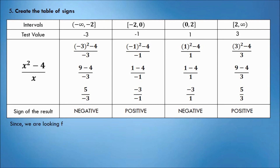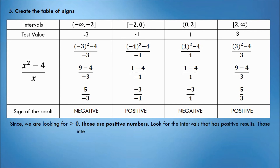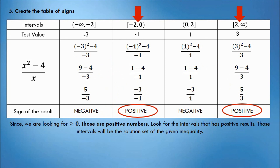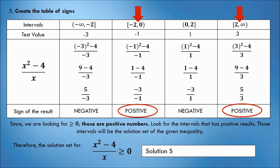Since the given inequality is looking for greater than or equal to 0, we look for positive results. Look for the intervals in the table that have positive results — those intervals will be the solution set of the given inequality. Therefore, the solution set for (x squared minus 4) all over x ≥ 0 is the second interval and the fourth interval.